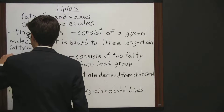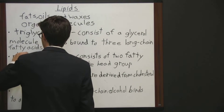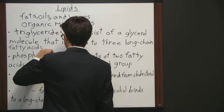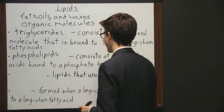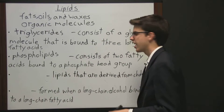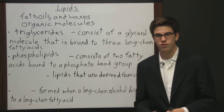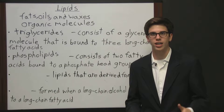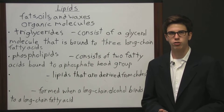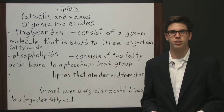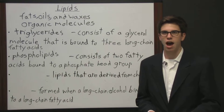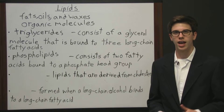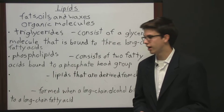A second grouping is phospholipids, and these consist of two fatty acids bound to a phosphate head group. The fatty acid portions avoid water, meaning they're hydrophobic, while the phosphate head groups seek water, meaning they're hydrophilic. So phospholipids have a structural function — they make up cell and organelle membranes in your body.